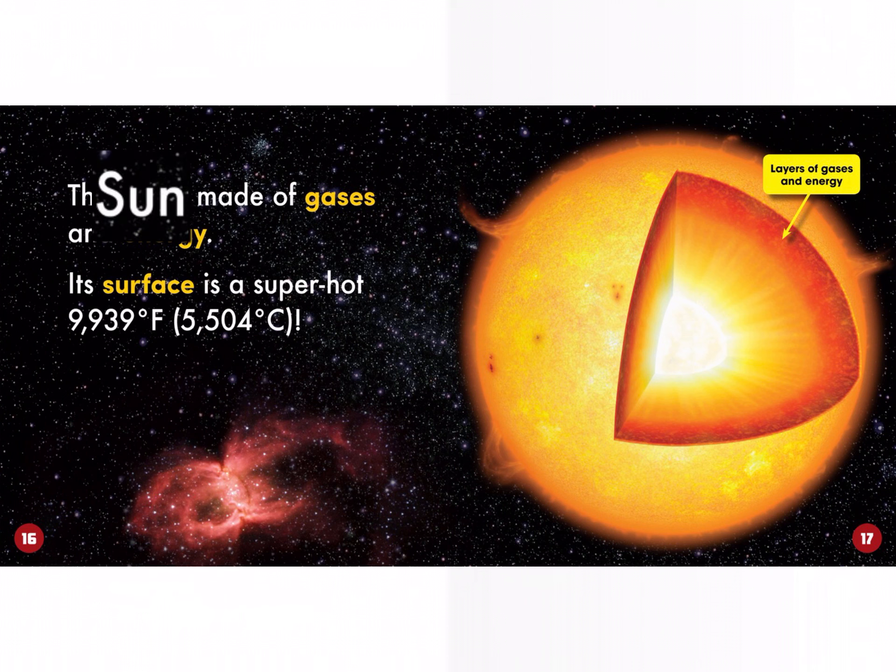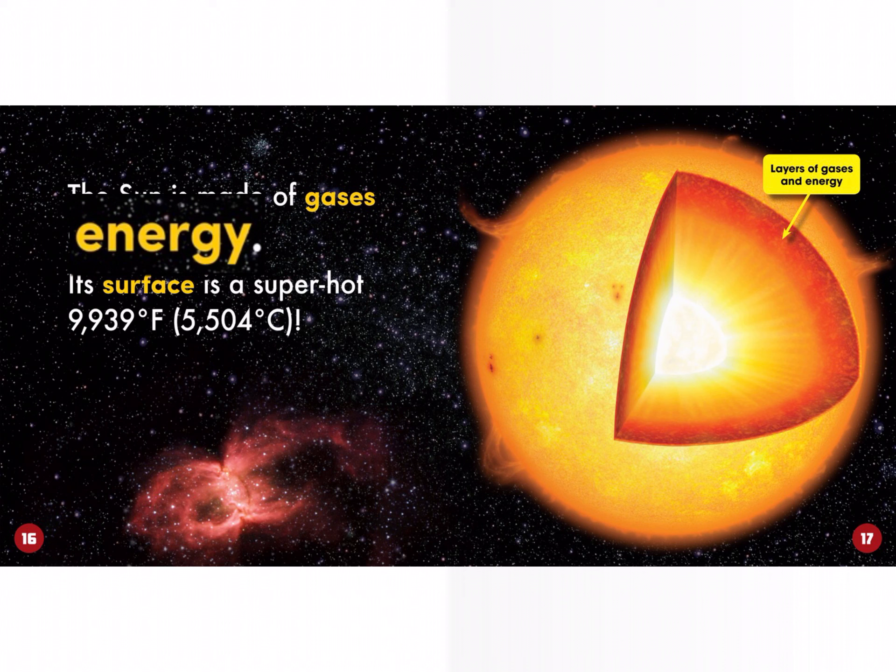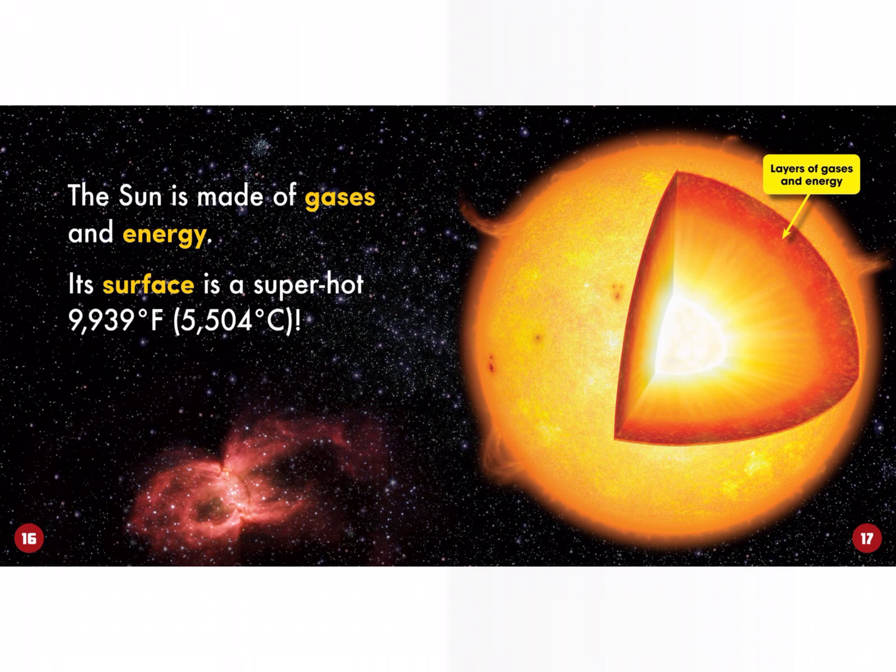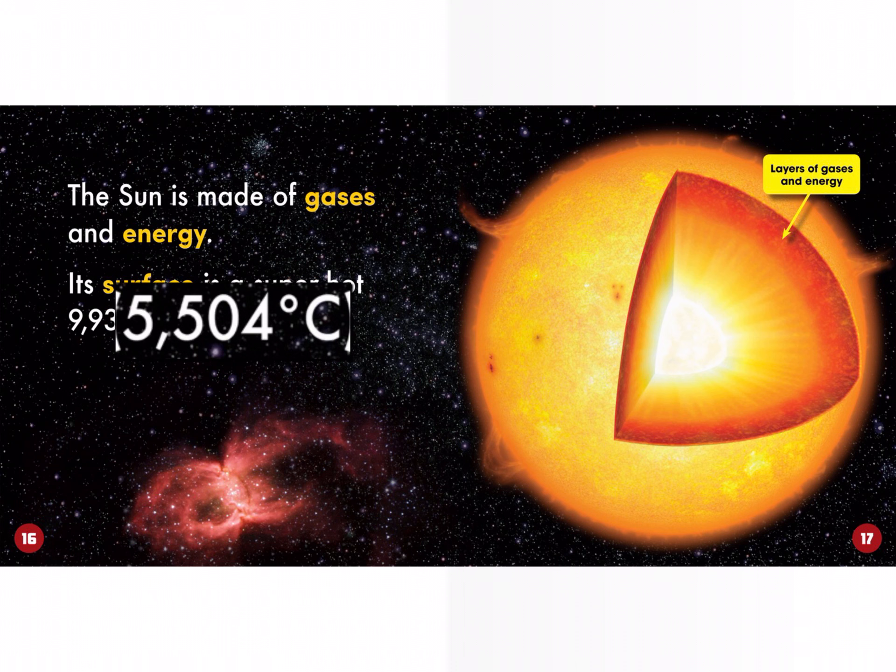The Sun is made of gases and energy. Its surface is a super-hot 9,939 degrees Fahrenheit, 5,504 degrees Celsius.